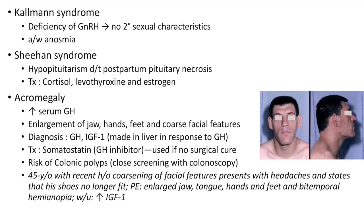Now let us see about Kallmann syndrome. In this case there is deficiency of gonadotropin-releasing hormone, so the affected individual will have no secondary sexual characteristics. It is also associated with anosmia. Now let us see about Sheehan syndrome — hypopituitarism due to postpartum pituitary necrosis. We have to treat hypopituitarism with cortisol, levothyroxine and estrogen.